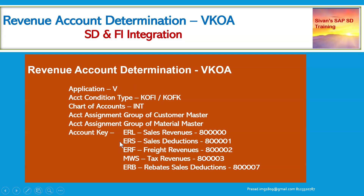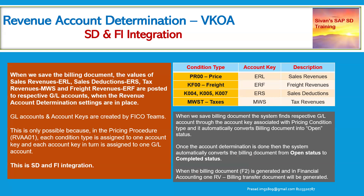This is always the SD and FI integration. When we save the billing document, the values of sales revenues, sales deductions, tax revenues, and freight revenues are posted to the respective GL accounts — when the revenue account determination settings are in place. The GL accounts and account keys are normally created by FICO teams. So where does the SD and FI integration start? This is where it starts.